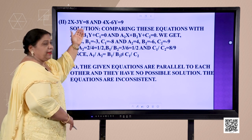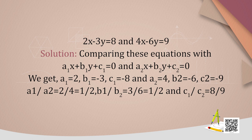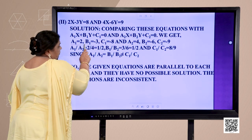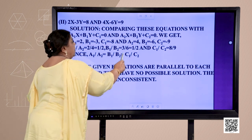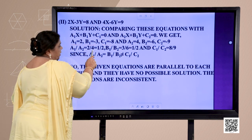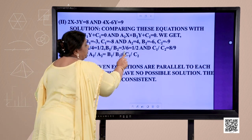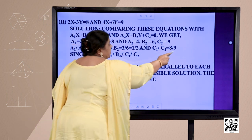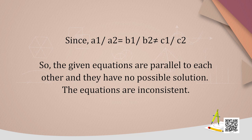Look into the second part: 2x − 3y = 8 and 4x − 6y = 9. Comparing with general equations, we get a1=2, b1=3, c1=−8, and a2=4, b2=−6, c2=9. The ratios: a1/a2 = 2/4 = 1/2, b1/b2 = 3/6 = 1/2, and c1/c2 = 8/9. Since a1/a2 = b1/b2 but not equal to c1/c2, the equations are parallel to each other and have no possible solution. The equations are said to be inconsistent.